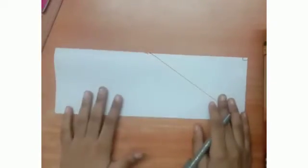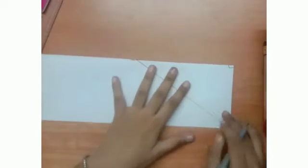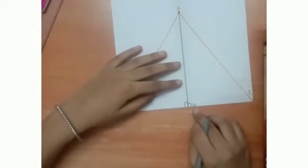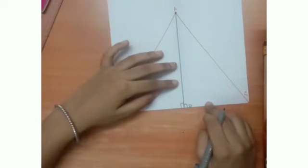Because when we form this figure, we can see that this is a rectangle. So in this rectangle, this angle will always be equal to 90 degrees. And when we unfold this, we get these two angles equal to 90 degrees.